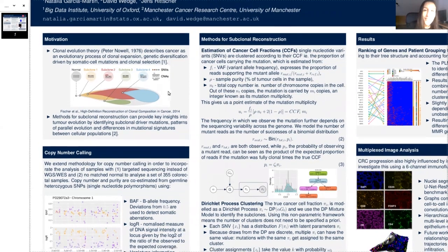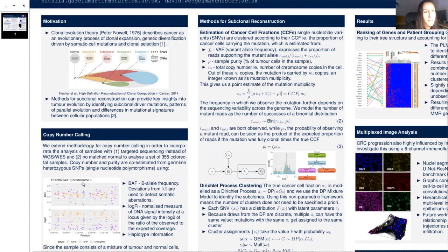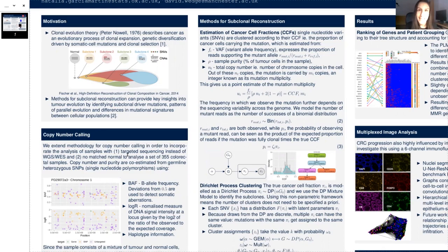The first step for our subclonal reconstruction is to do the copy number calling, to be able to identify these copy number segments. The copy number caller that we use in the lab is called Battenberg, and I have been working on adapting this to make it work for targeted sequencing without a matched normal sample.